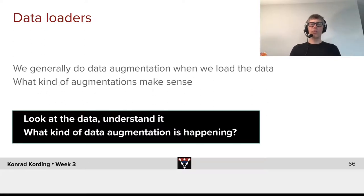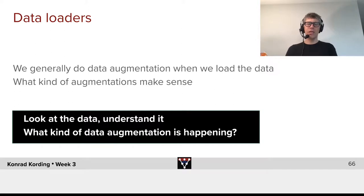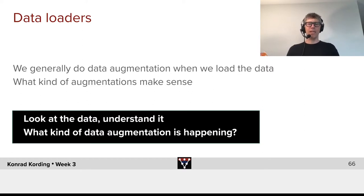Central to the process are data loaders, and we generally will do data augmentation when we load the data. What kind of augmentations make sense? Look at the data here and understand it, and what kind of data augmentation is happening in the code — and why does that make any sense?